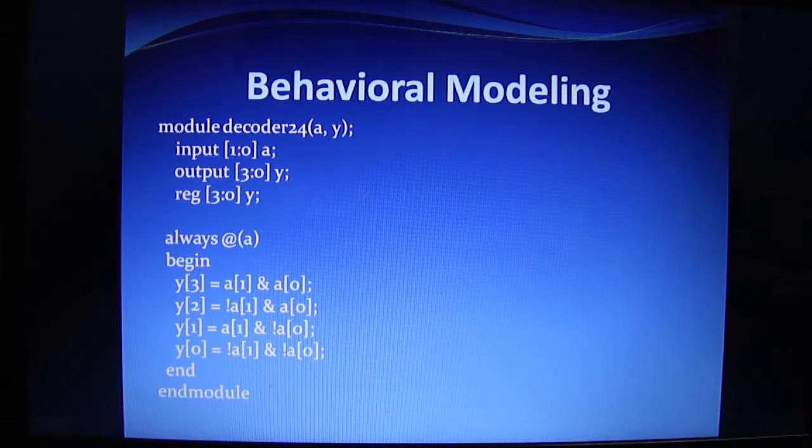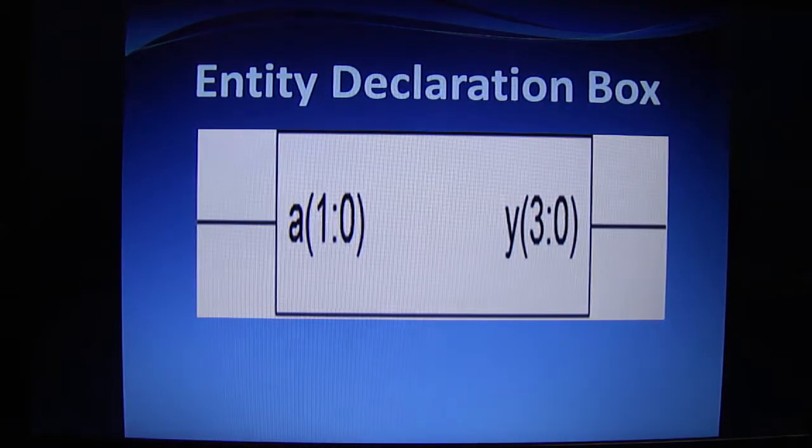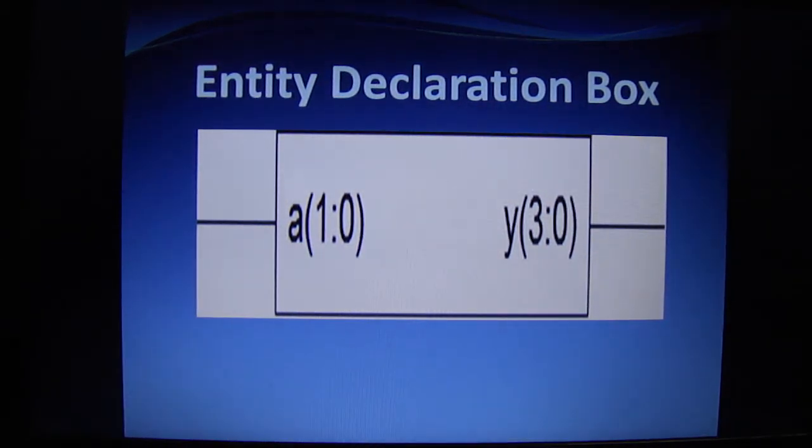And then endmodule. So this is the way when we are writing the program as per our truth table, that is, as per the behavioral style. So this is known as behavioral modeling.